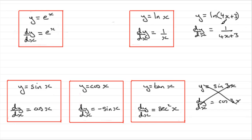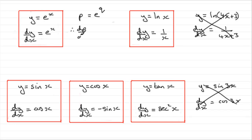All that we can do, based on these tables, is single values. So for instance, if I had p equals e to the power q, then it would follow that dp by dq equals e to the q. And if I had a number in front of these functions, like a 3, that doesn't affect the result — it becomes 3 times the differential of e to the q.